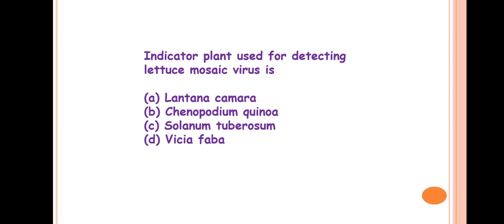Next question is: indicator plant used for detecting lettuce mosaic virus is? So the answer is Chenopodium quinoa. This is the indicator plant to detect the presence of lettuce mosaic virus in a seed lot or seed sample. Generally local lesion assay is performed for detecting the virus on these indicator plants. This is also known as virus indexing to detect virus presence in a seed lot or seed sample.